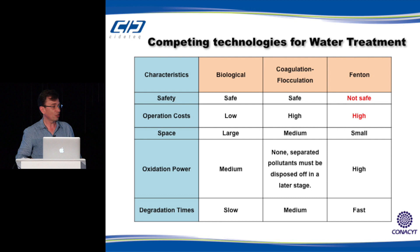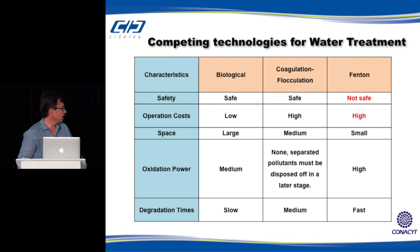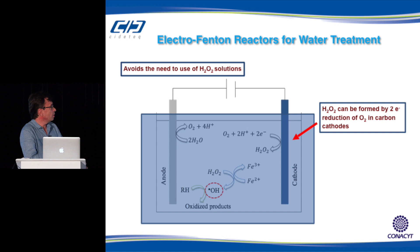When you compare that to regular biological or physical chemistry processes—and this is not an exhaustive table, just an example—you can find that the Fenton reagent approach is not safe and its operation costs are high. It has some advantages: it requires a small space, has high oxidation power, and degradation times are fast. But being not safe and having high operation costs prevents Fenton technology from being developed and commonly used.